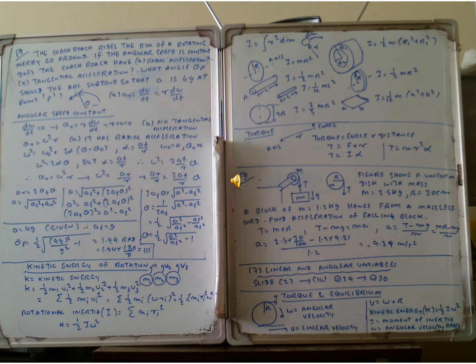So I can be calculated by integrating R squared dM. For a shape, you can see there is a hollow cylinder. In this case, I is equal to half M times R1 squared plus R2 squared. And for this, I can be calculated: 1 by 2 multiplied by M into A squared plus B squared.